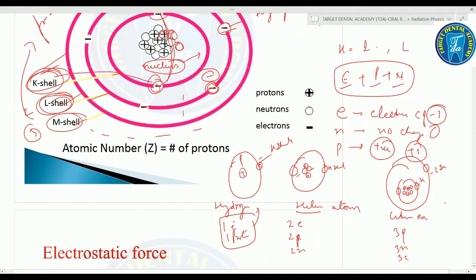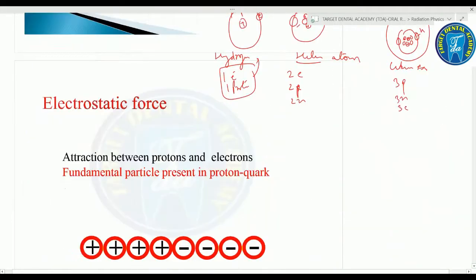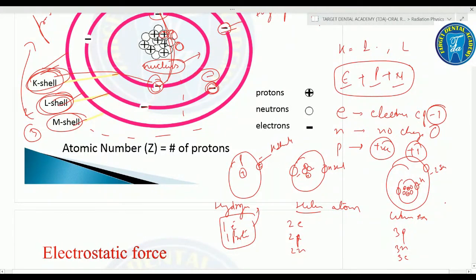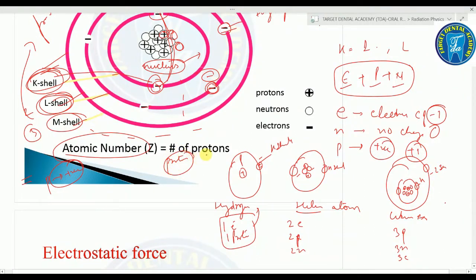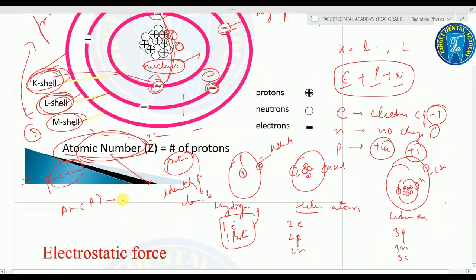The number of protons in the nucleus determines the positive charge. The atomic number — the number of protons in the nucleus — determines the identity of the element and is represented by Z. The atomic mass, represented by A, is the total number of protons and neutrons in the nucleus of an atom.